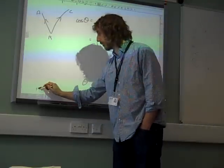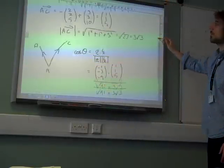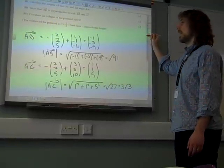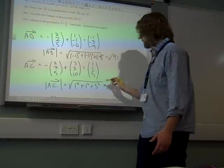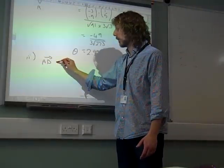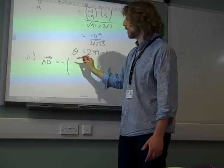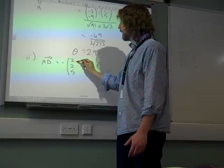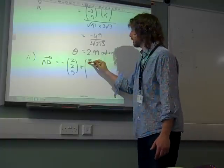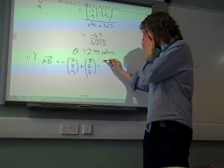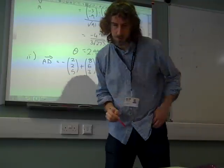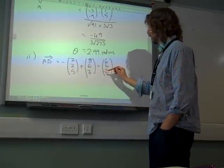Part 2: show that AD is perpendicular to both AB and AC. So we need the vector AD. The vector AD — following the same pattern — is minus OA plus OD, which is 8, 6, 3, giving us a vector of 6, 4, minus 2.